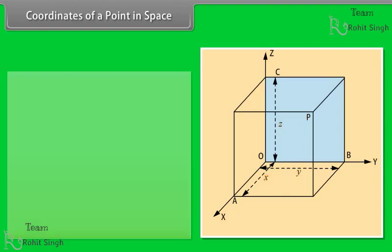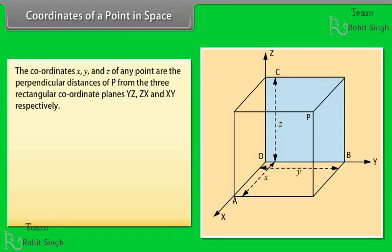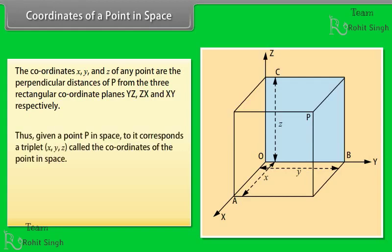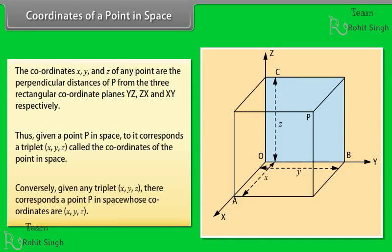The coordinates x, y, and z of any point are the perpendicular distances of P from the three rectangular coordinate planes YZ, ZX, and XY respectively. Thus, given a point P in space, there corresponds a triplet (x, y, z) called the coordinates of the point in space. Conversely, given a triplet (x, y, z), there corresponds a point P in space whose coordinates are x, y, z.